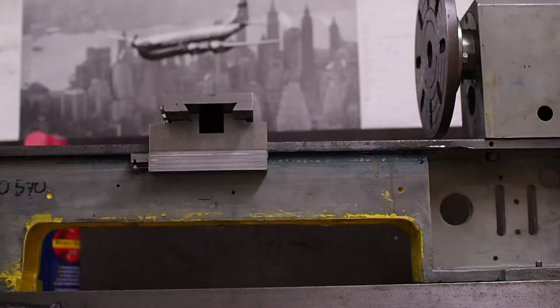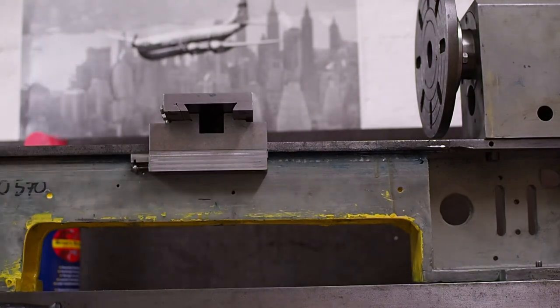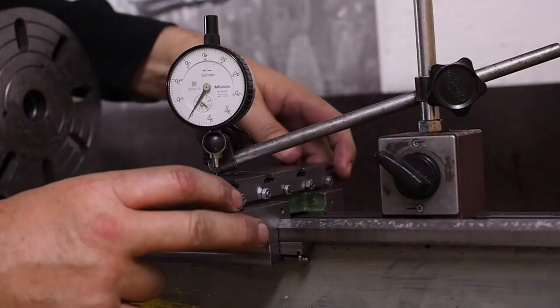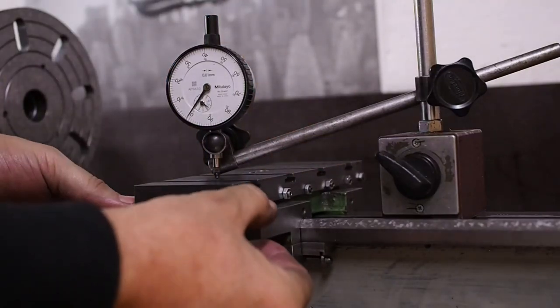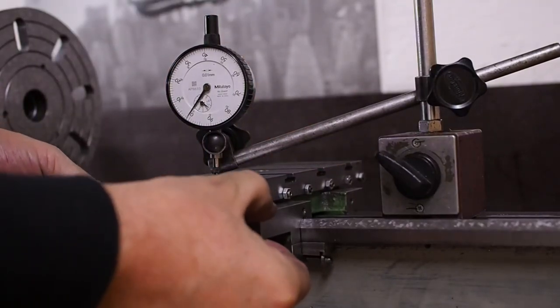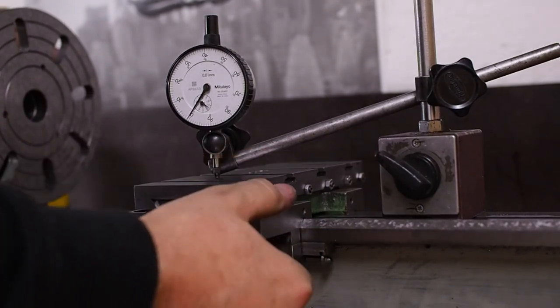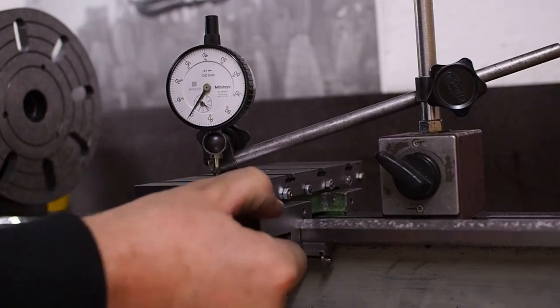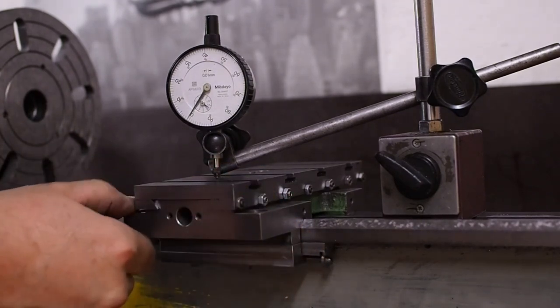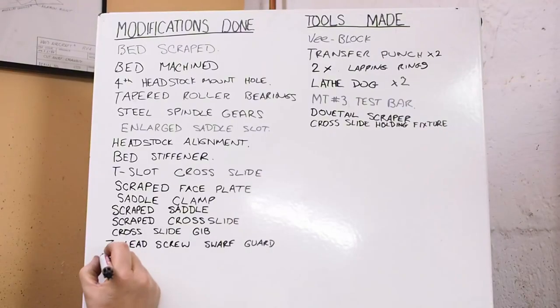Absolutely no play or anything in there. I'll put a dial test indicator on it and we'll have a look at how much deflection we get. With the bed adjusted nicely, as before, there's basically no vertical movement other than if I really force things and start distorting the bed, but there's definitely no looseness or wobble between the bed and the saddle now. So yeah, I'm very happy with that.